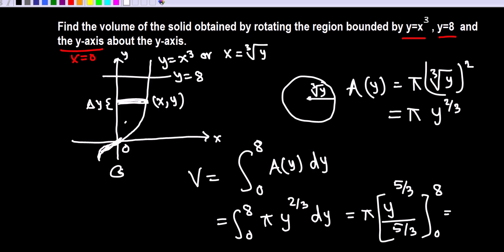We evaluate the function at 8 and at 0. The lower limit gives 0, so we have pi times three-fifths times 8 to the five-thirds. Dividing by five-thirds brings three-fifths to the front, giving three-fifths pi. Plugging in 8: 8 to the five-thirds equals 32, so the final answer is three-fifths pi times 32, which is 96pi/5 cubic units.